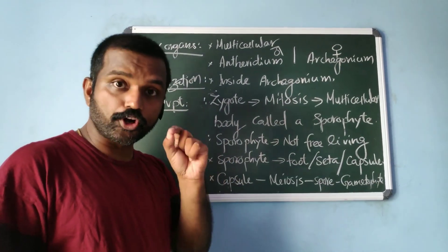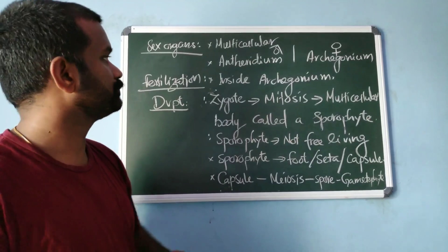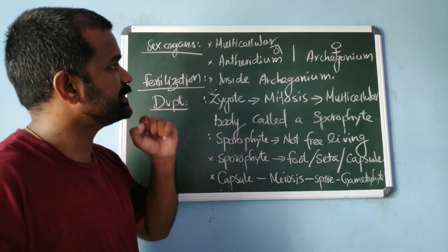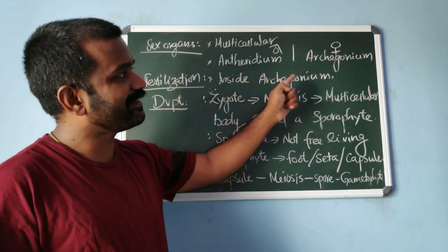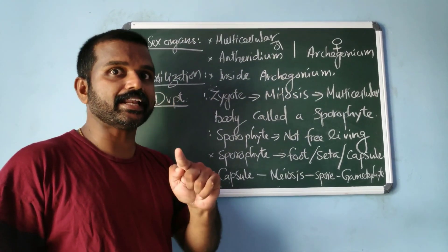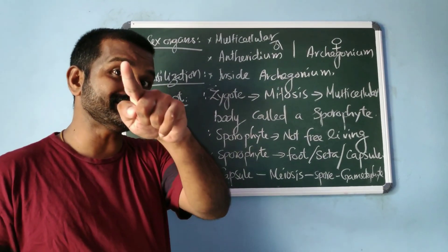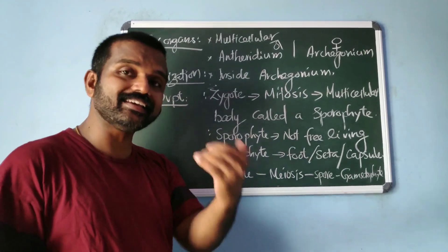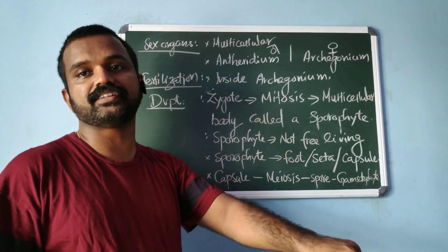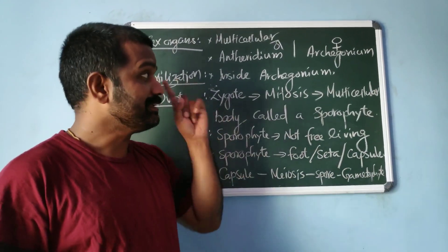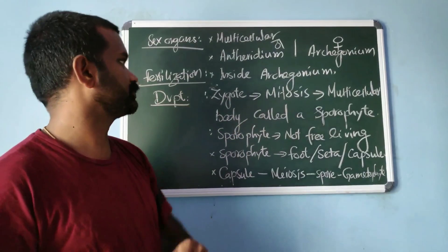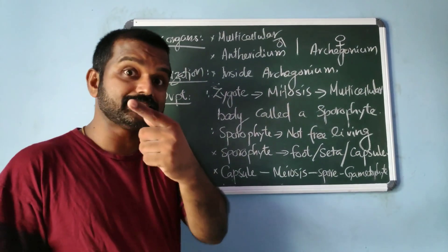The archegonium produces a single egg. Fertilization takes place inside the archegonium, meaning it is internal fertilization. In algae, fertilization takes place in water — that is external fertilization — whereas internal fertilization is seen in bryophytes.